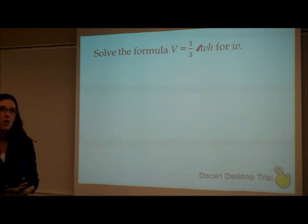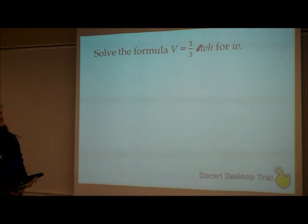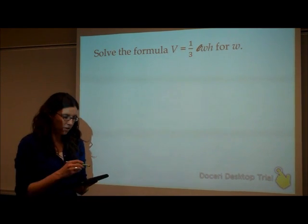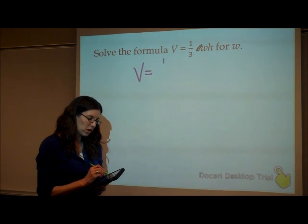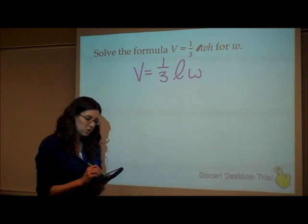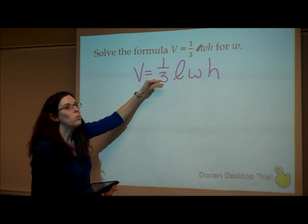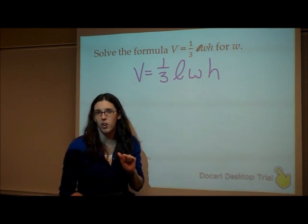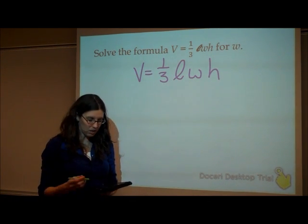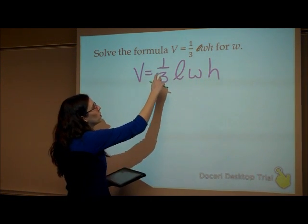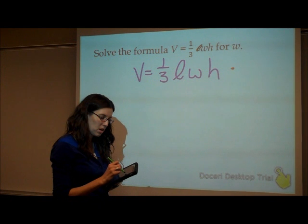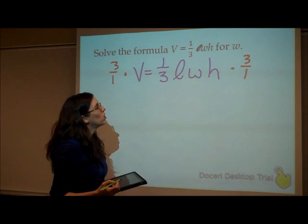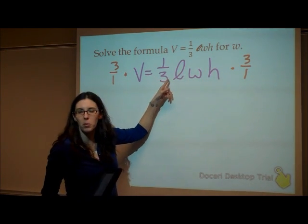So our next one is volume of a rectangular pyramid. This one causes some people some problems because of the fraction. So let's get rid of that first. So your formula is volume equals 1 third the length times the width times the height. One way you can get rid of fractions is by multiplying each side by the reciprocal of that fraction. So flip it. Instead of multiplying it by or dividing by 1 third, we're going to multiply by 3 over 1, which 3 over 1 is the same as 3. If you take 3 and multiply it by 1 third, you get 1.